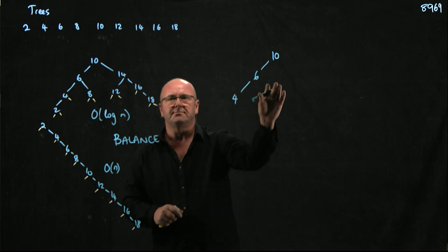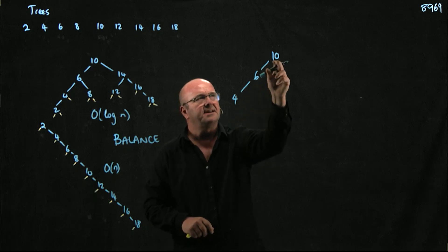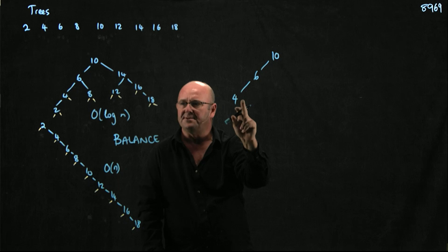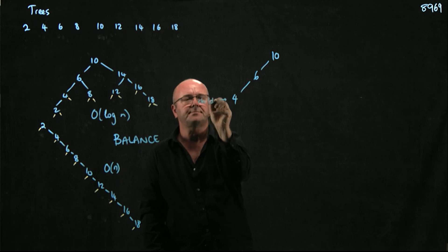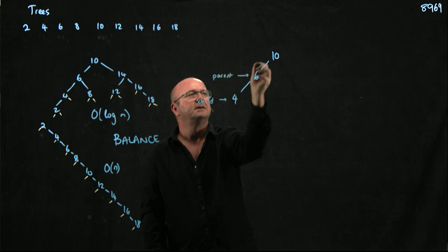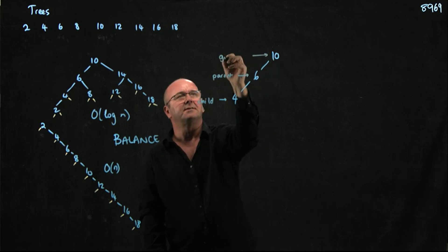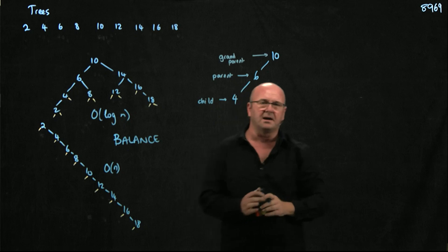So what I really want to do as I'm adding these numbers is I've added the 4. So I added the 10, the 6, and then I added the 4. So this is the child node. This is the parent node. And this is the grandparent.